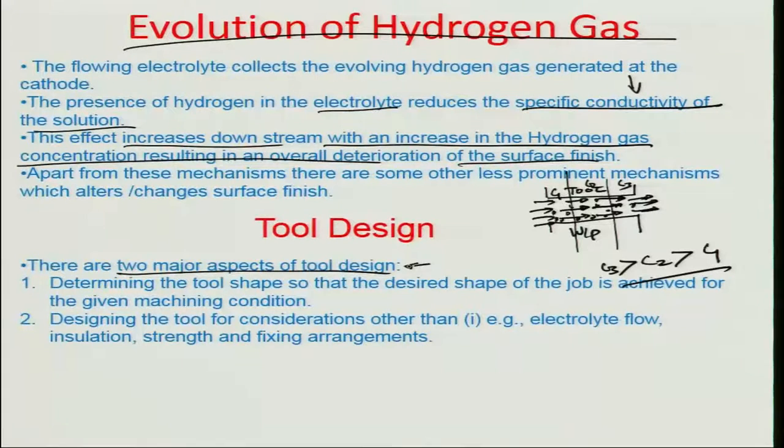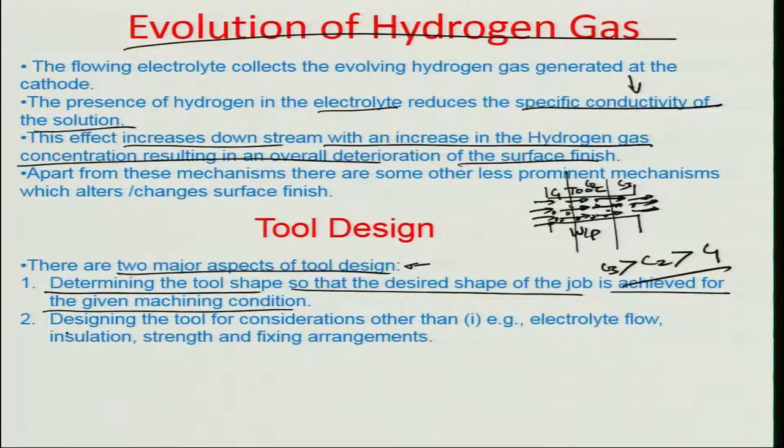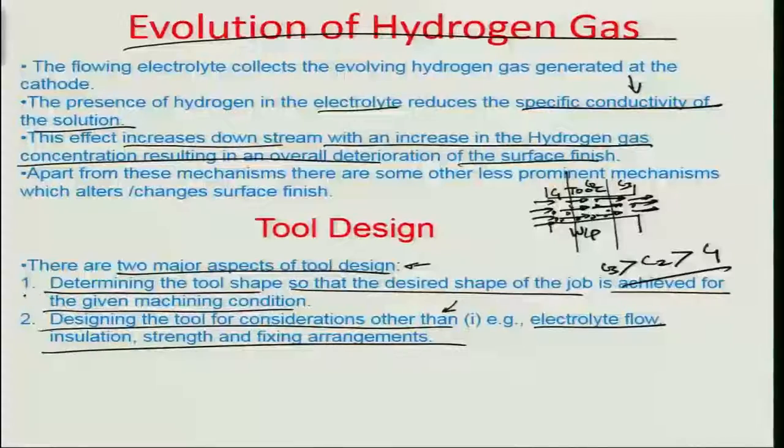ECM is also known as a die-sinking process, where the exact shape of the die and its negative imprint would be replicated on the work surface. There are two major aspects of tool design: one is determining the tool shape so that the desired shape of the job is achieved for given machining conditions, and another is designing the tool for considerations other than overall tool shape — such as electrolyte flow — which affects surface finish through selective dissolution, sporadic breakdown of the anodic film, hydrogen gas accumulation, and eddies or vortices.